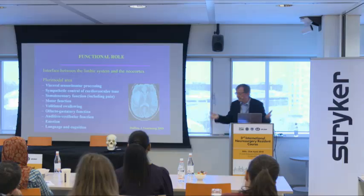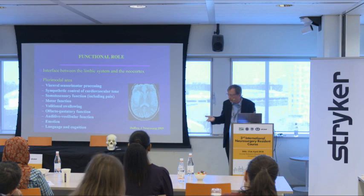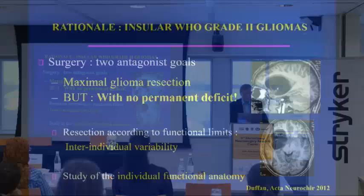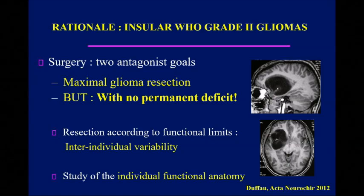Nonetheless, you know that if you remove the insula, the patient will recover, if you preserve the connectivity. Why? Because it's a bilateral system and compensation occurs thanks to the contralateral hemisphere. So the goal is the same — if you can remove the tumor earlier, it's better. Because most of the time in these cases, they have intractable seizures, so you will also improve the quality of life of the patient.